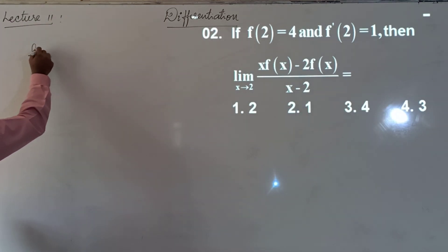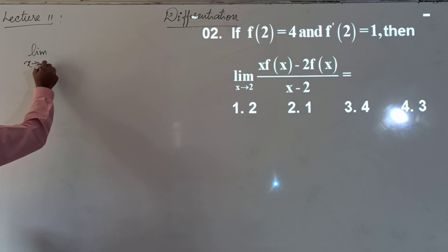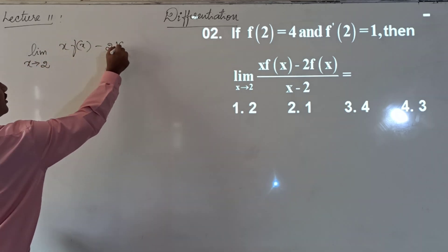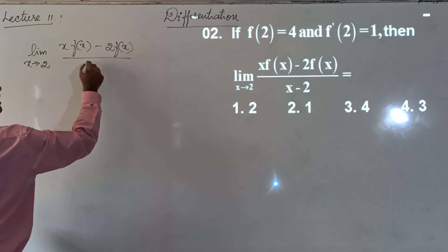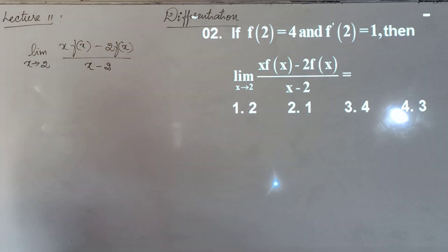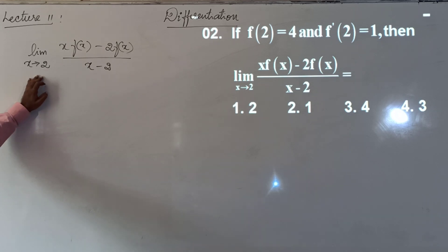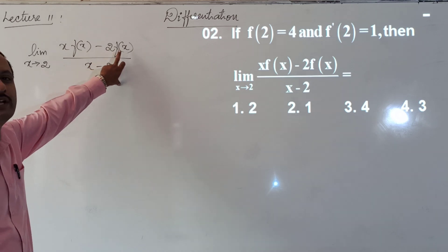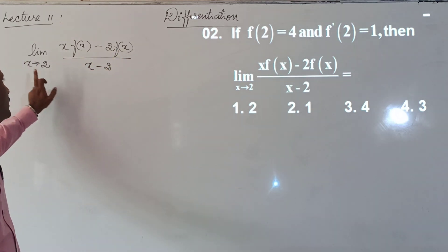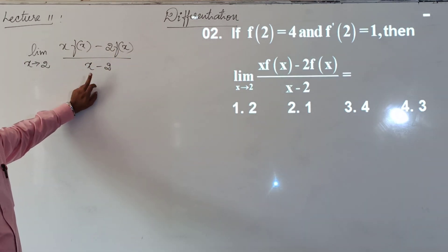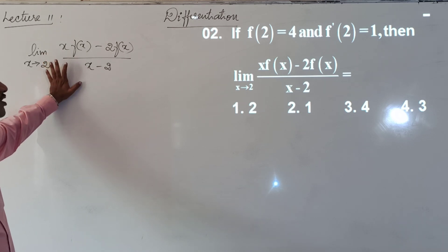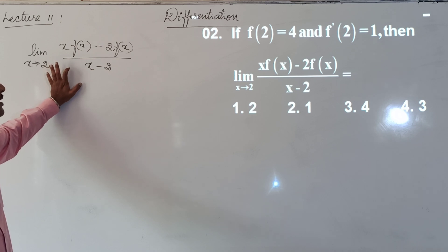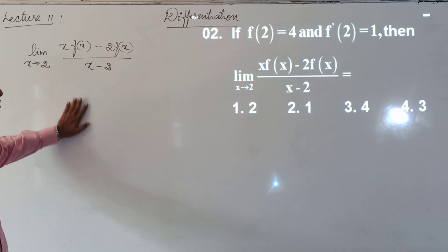We have the limit as x→2 of [x·f(x) − 2·f(x)] / (x − 2). Directly applying the limit gives 2·f(2) − 2·f(2) in the numerator, which is 0, and 2 − 2 = 0 in the denominator. So this is a 0/0 indeterminate form.